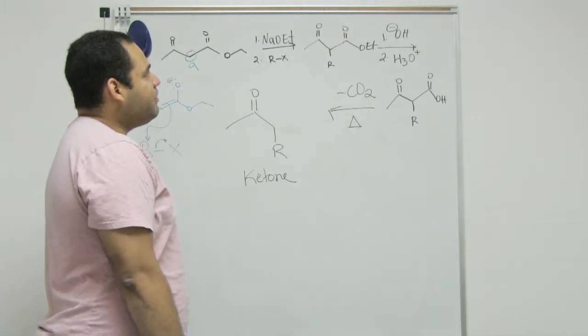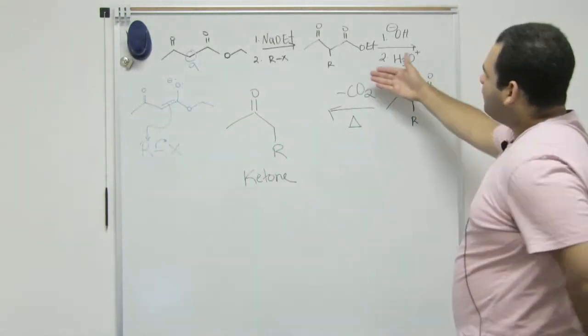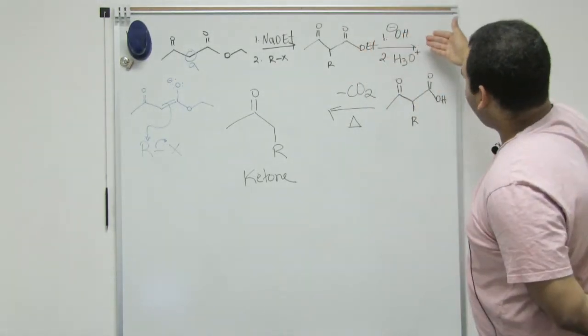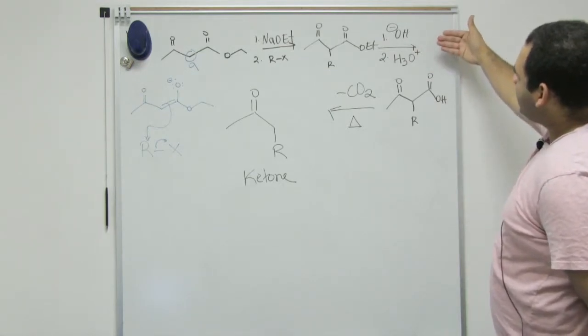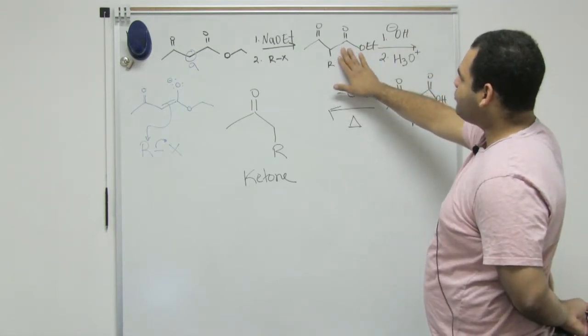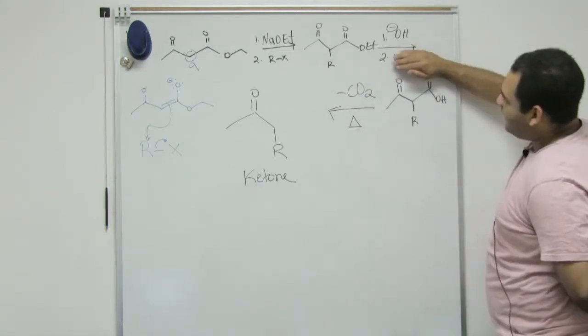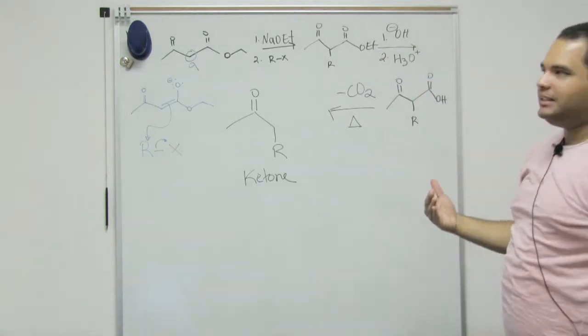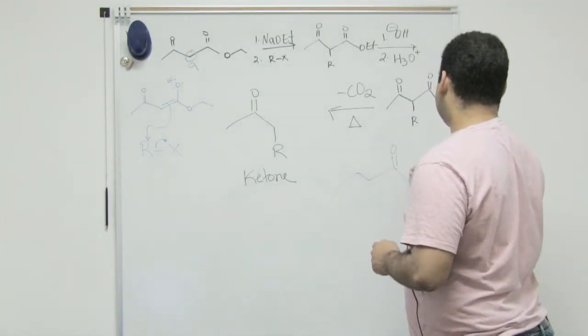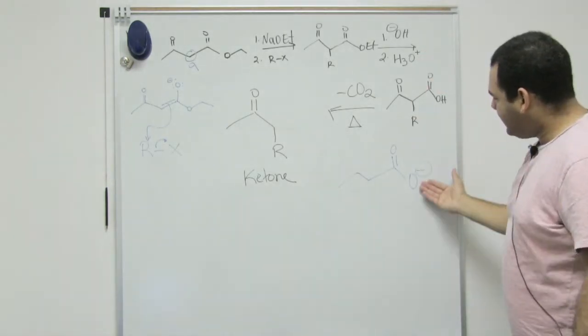Now the next step, if you remember, when we have an ester, we learned in chapter 19 about a reaction called saponification. Where, under basic conditions, we can dehydrate this particular molecule. And end up with, if I don't have the acid, I'll end up with a carboxylate, which is the conjugated base of a carboxylic acid. But then we add an acid, and we place the hydrogen back here.